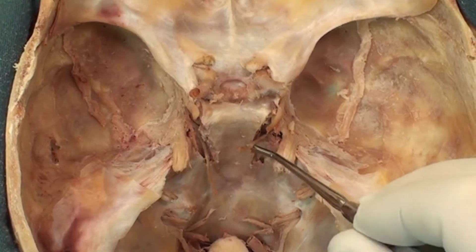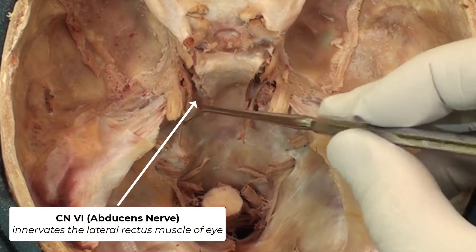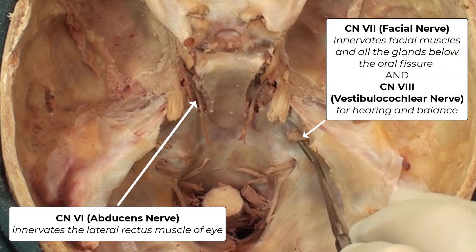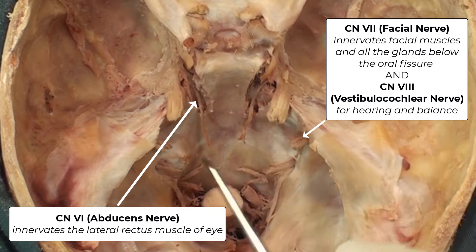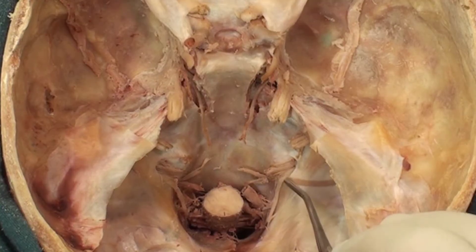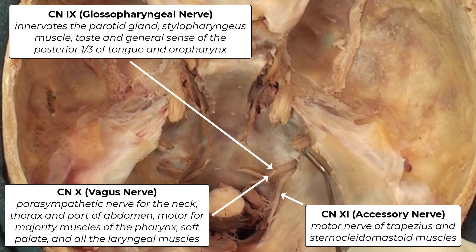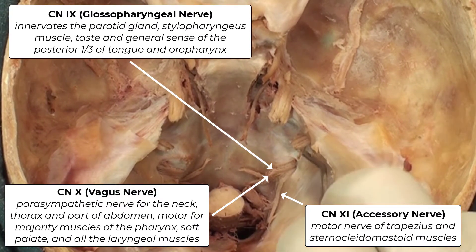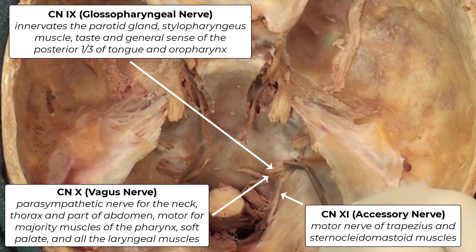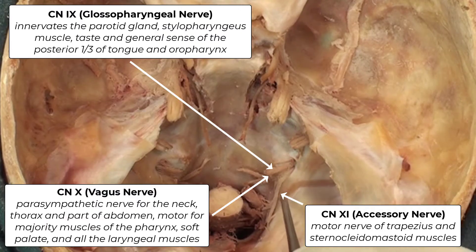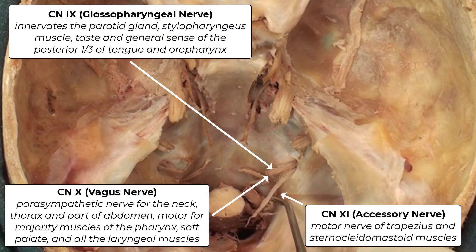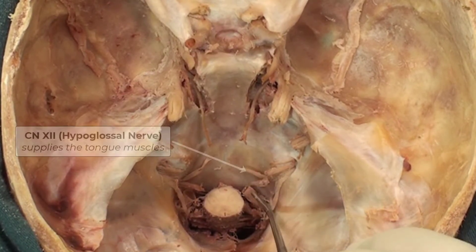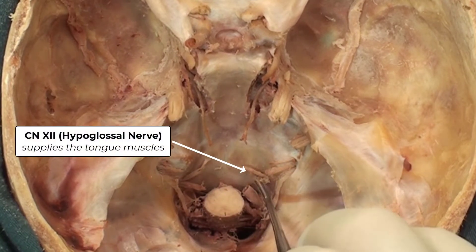Moving backward, we have cranial nerve six — the abducens — and then cranial nerves seven and eight, passing through the internal acoustic meatus, one on each side. Then we have cranial nerves nine, ten, and eleven. Note that seven, eight, nine, ten, and eleven are not easy to separate from each other, so we mention them together. However, for nine, ten, and eleven, we can see the spinal part of eleven coming all the way up to join the other nerves. And last but not least, cranial nerve twelve — the hypoglossal nerve — passing through the hypoglossal canal, and the nerve has been split on each side.